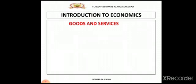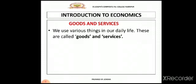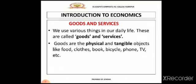That is goods and services. What is goods and services? Using various things in our daily life is called goods and services. For example, clothes, food, book, bicycle, phone, TV, etc. So, these are all goods.